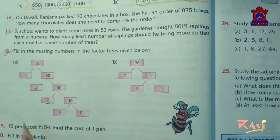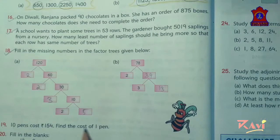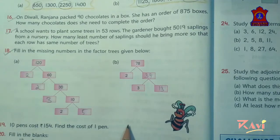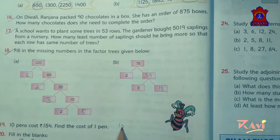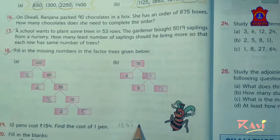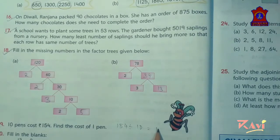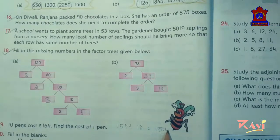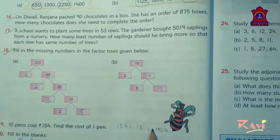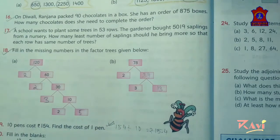Let's move to question number 19. 10 pence cost Rs. 154. Find the cost of 1 pence. So what will you do? 154 will be divided by 10. You will get the cost of 1 pence Rs. 15.4. So you do the division and get the answer.